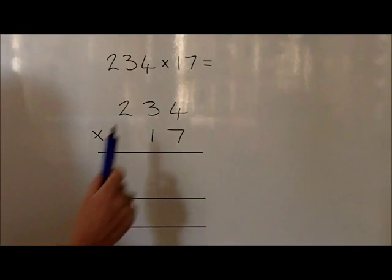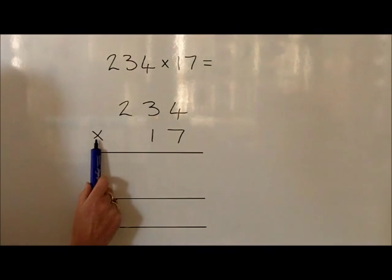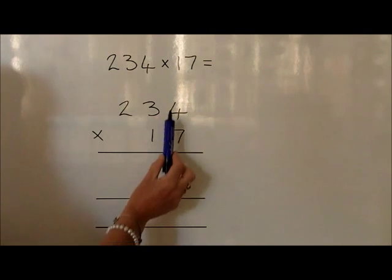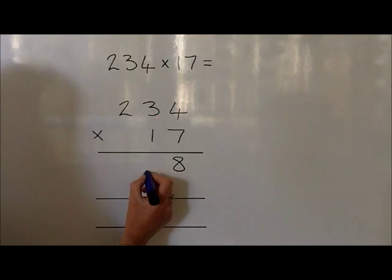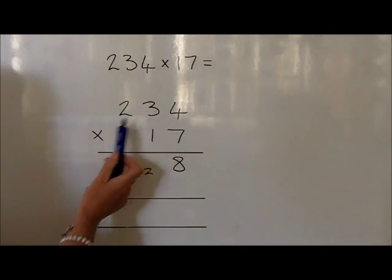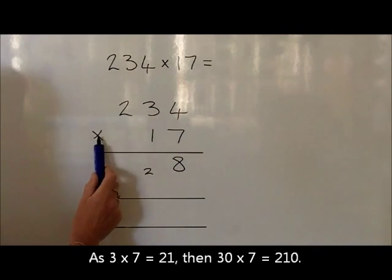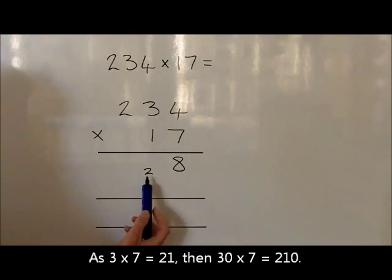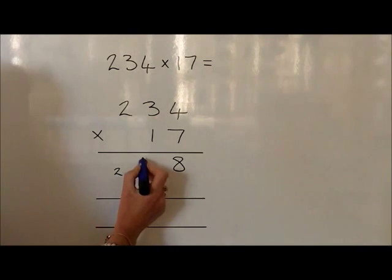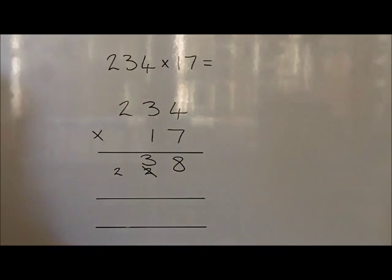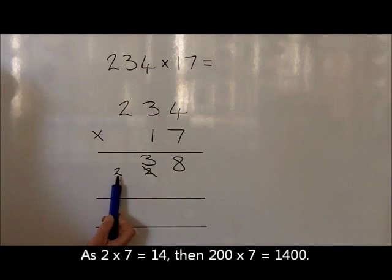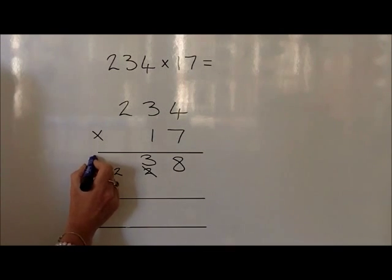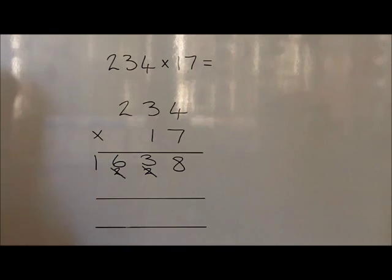With the question 234 times by 17, we first write the 234 on the top line and then multiply this all by 17. Once again, we start with the least significant digits, looking initially at 4 times 7, which is 28, which we write as an 8 in the units and 2 carried to the tens. We now look at 30 times 7. We know that 3 7s are 21, so 30 times 7 is 210, plus the 20 carried is 230 — a 2 in the hundreds and a 3 in the tens, crossing out the carry used. We now look at 200 times 7. We know that 2 7s are 14, so 200 times 7 is 1,400, plus the 200 carried is 1,600, which we write as a 1 in the thousands and a 6 in the hundreds, crossing out the two hundreds carried.